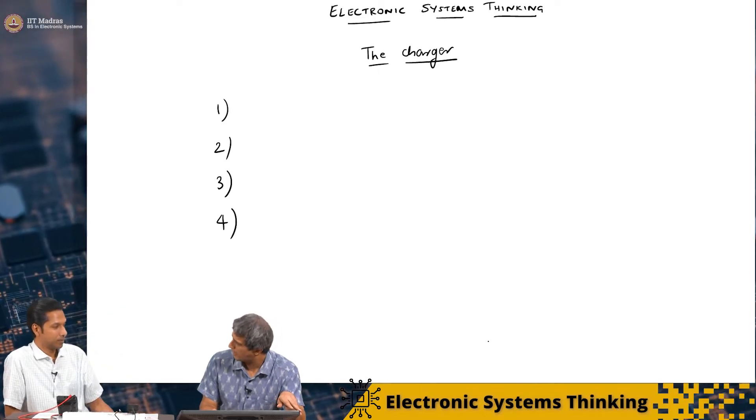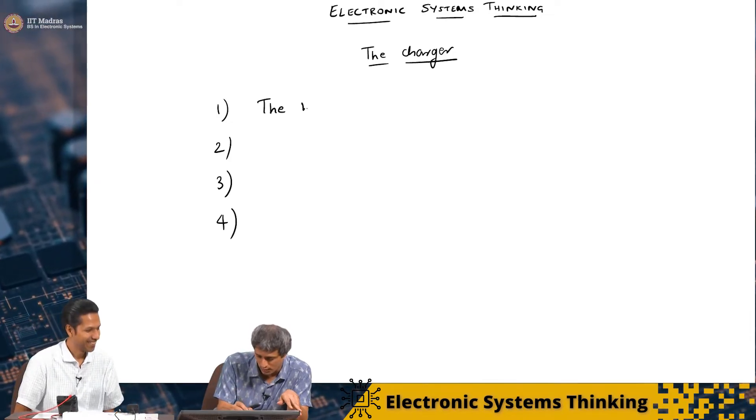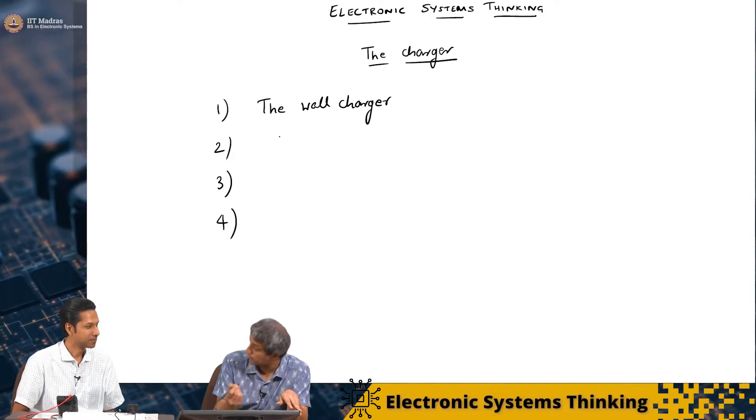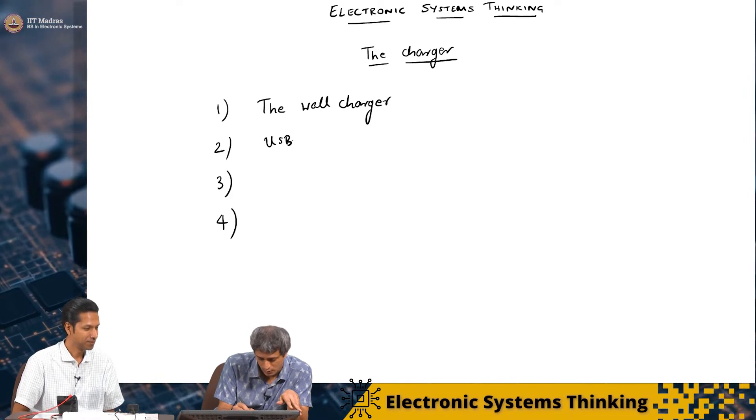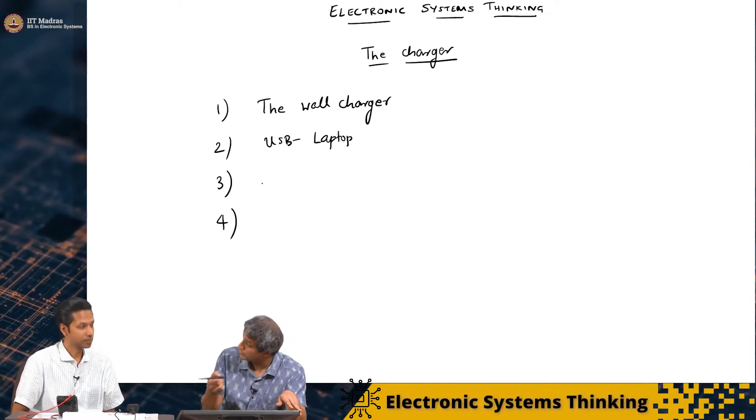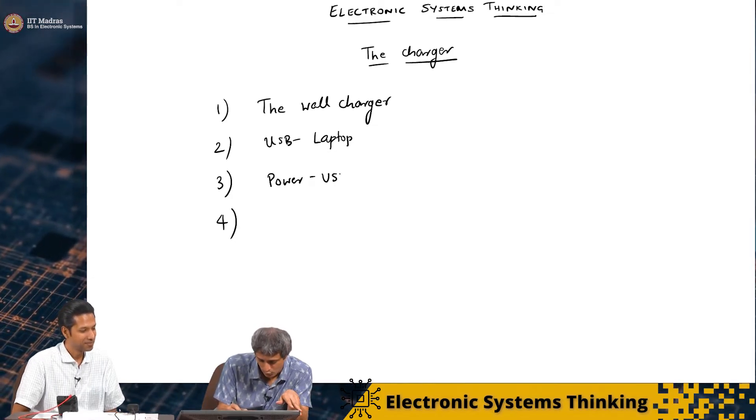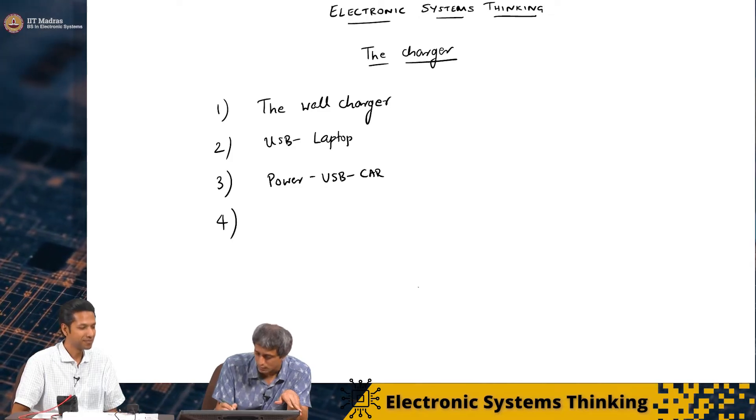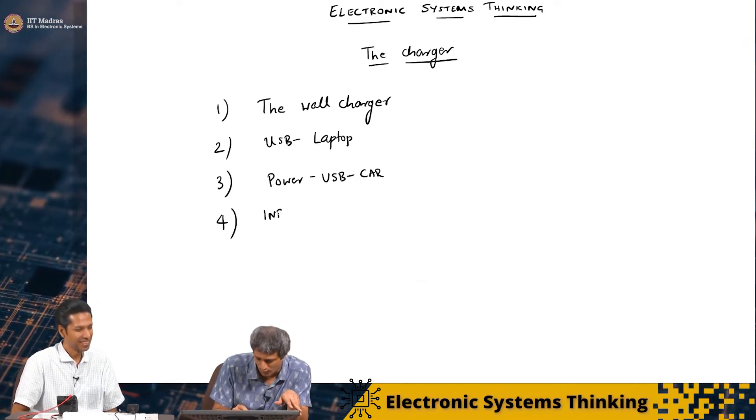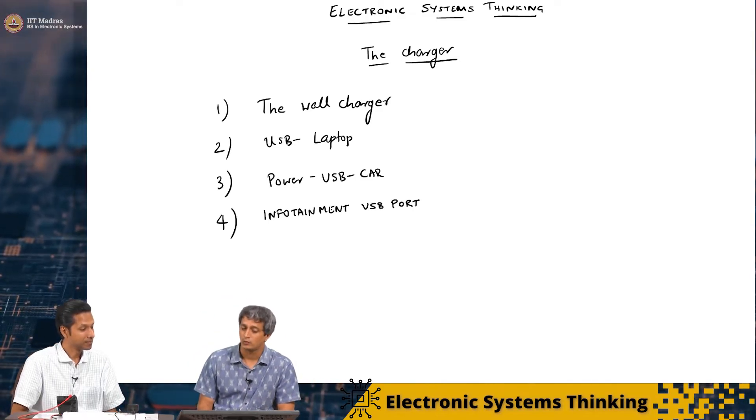I'm going to charge my mobile from four different sources. From four different sources, yes: the wall charger, my laptop's USB charger, the power USB port of my car, and finally I'm going to verify my infotainment port as well, the one that you claim will not work. Let's try. So this is the experiment that I'm going to conduct.